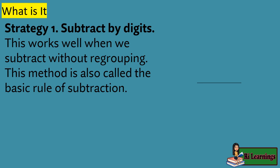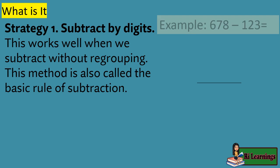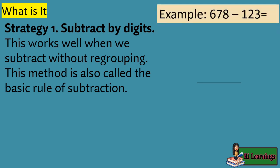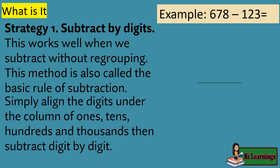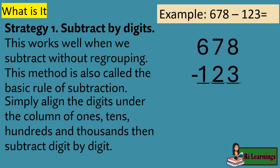Strategy 1: Subtract by digits. This works well when we subtract without regrouping. This method is also called the basic rule of subtraction. Example: 678 minus 123. Simply align the digits under the column of ones, tens, hundreds, and thousands, then subtract digit by digit. Solution: 8 minus 3 equals 5, 7 minus 2 equals 5, 6 minus 1 equals 5. Therefore, 678 minus 123 equals 555.